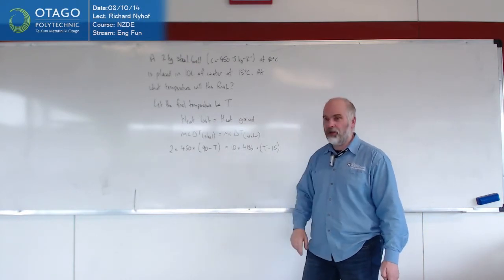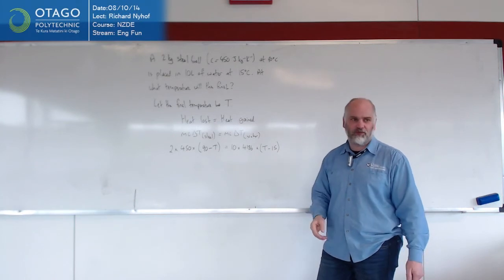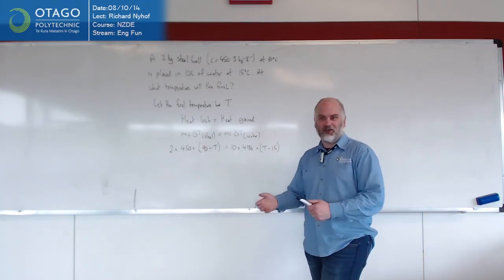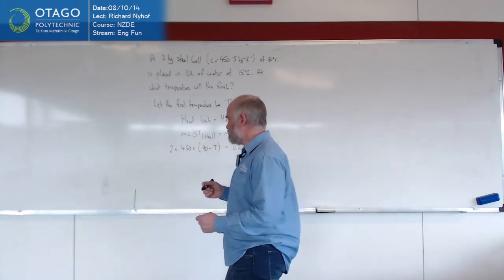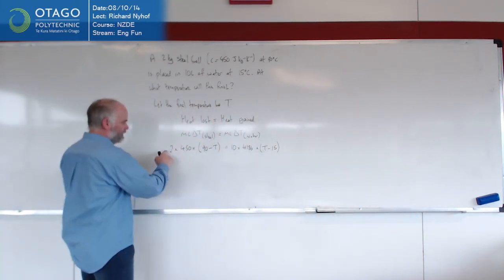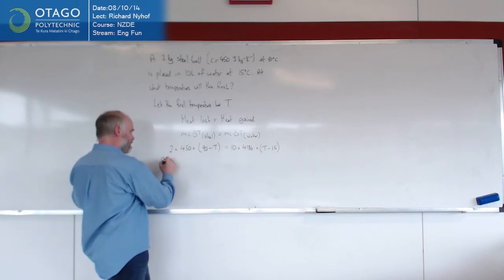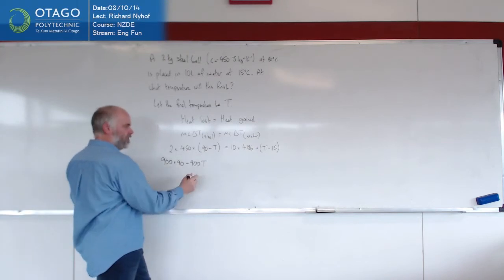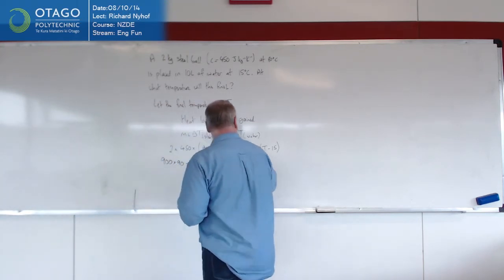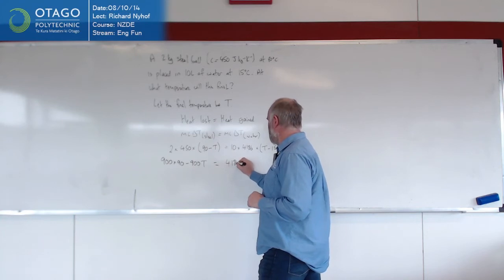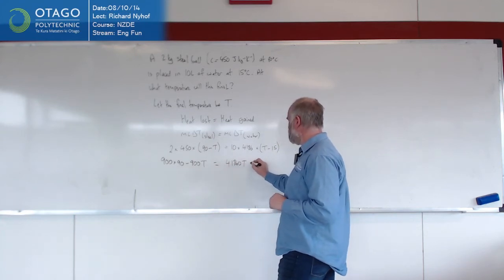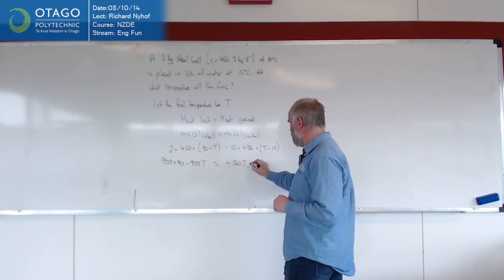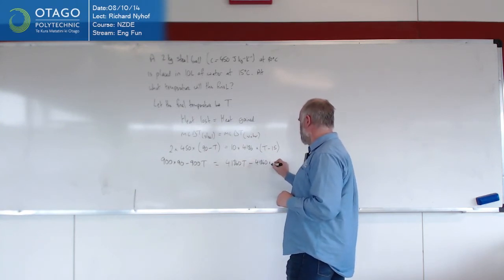We've only got one unknown. It occurs twice, but we don't have to deal with that because we've done a bit of maths. There'll be a bit of shifting stuff to one side and factorising and all that sort of business. So let's just do some maths. That number is 900. So 900 times 90 minus 900T, expanding that bracket, equals 41860 times T minus 15.